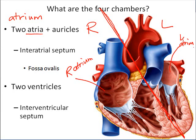Alongside the atria there are little outpouchings — unfortunately this picture doesn't show them well — but they would be little outpouchings called the auricle. Auricle means ear, and it looks a little bit like an ear flap. If you do dissection in lab, you'll be able to see the auricles associated with the atria. Dividing the two atria from one another is something called the interatrial septum — inter meaning between, and septum meaning wall.